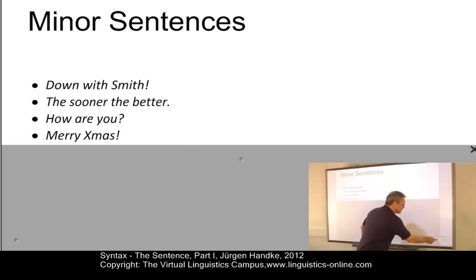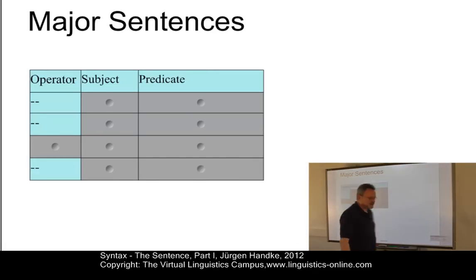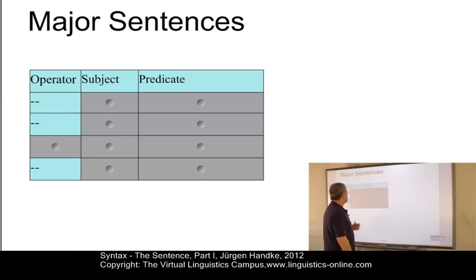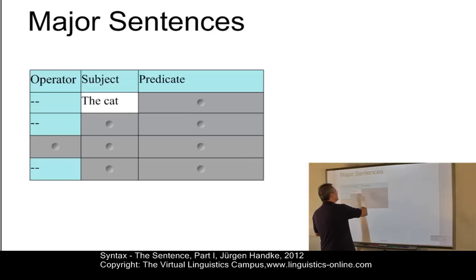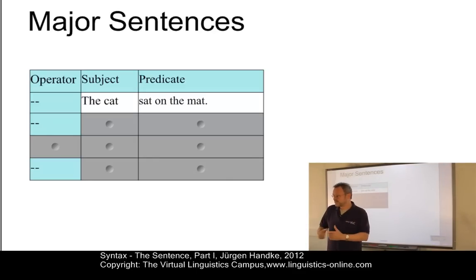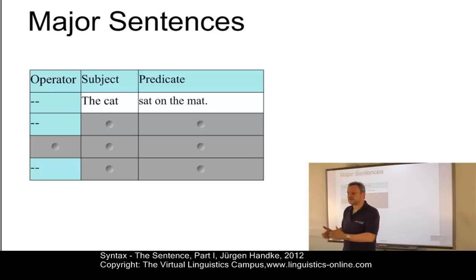Let's contrast this with major sentences. Major sentences typically have a subject-predicate structure, and sometimes they are even preceded by a so-called operator. Here's one example: "The cat sat on the mat," where "the cat" is the subject and "sat on the mat" is the predicate. The predicate may even contain some arguments — an object, for example.